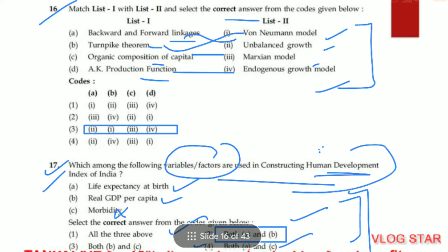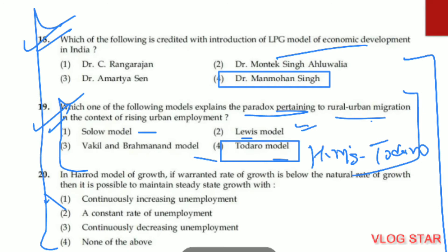Question number 17. The variables used in constructing the Human Development Index are life expectancy at birth and real GDP per capita — both A and B. The third factor contributing to HDI is education, or literacy. Question number 18. The LPG model of economic development was introduced by Dr. Manmohan Singh — the fourth option is correct.